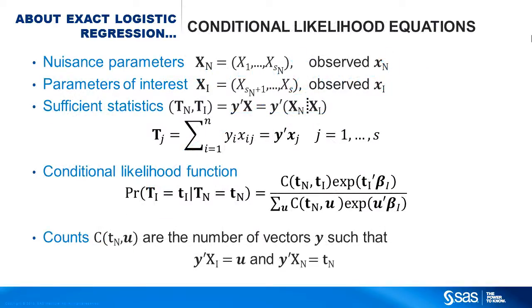However, for exact conditional logistic regression, you split the covariates into two pieces. The covariates you don't care about are the nuisance parameters, x sub n, and usually include the intercept. The other covariates are your parameters of interest, x sub i. You condition the nuisance parameters out of the likelihood and rewrite the likelihood in terms of the sufficient statistics. Since this is a generalized linear model, the sufficient statistics are just the y prime x.